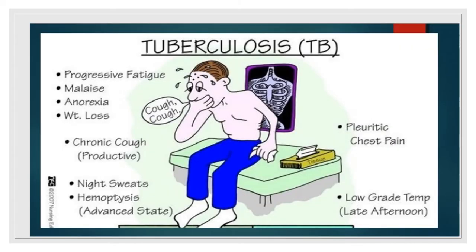Tuberculosis is diagnosed by progressive fatigue, malaise, anorexia and weight loss. A pulmonary tuberculosis patient comes with complaints of chronic productive cough, night sweats, hemoptysis, chest pain, and low grade fever especially in the evening or late afternoon.